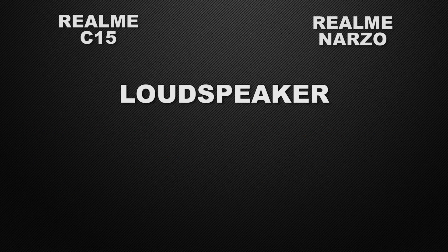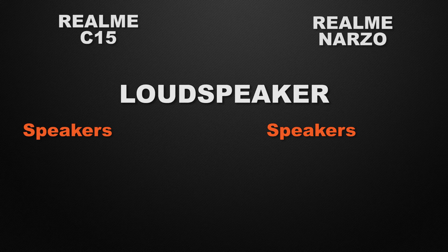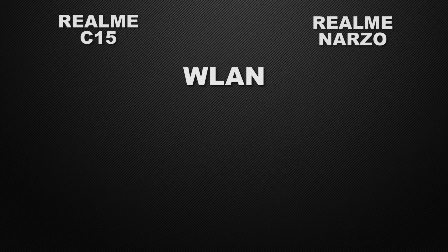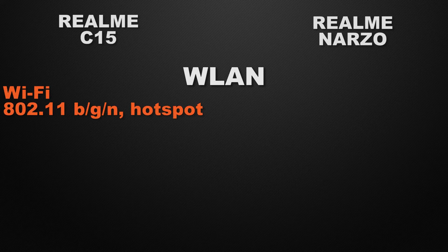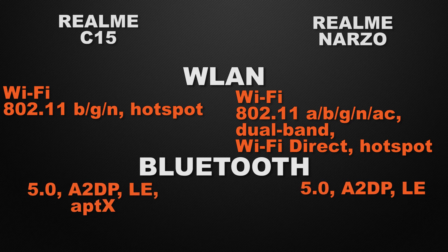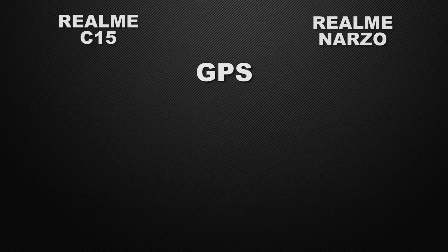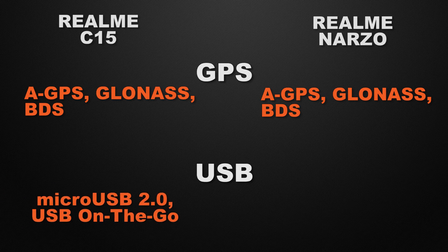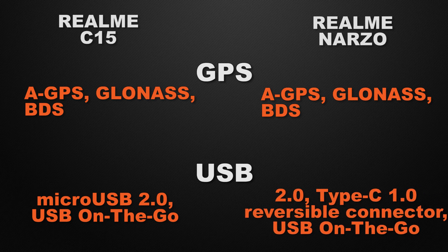Both devices have normal speakers and a 3.5mm headphone jack — ties on audio. For wireless LAN, the C15 has N-generation Wi-Fi and hotspot, while the Narzo has Wi-Fi a/b/g/n/ac dual-band, Wi-Fi Direct, and hotspot — Narzo wins with a newer Wi-Fi standard. Both have Bluetooth 5.0 and the same GPS support (AGPS, GLONASS, BDS) — ties. For USB, the C15 has Micro USB 2.0 with OTG and the Narzo has USB Type-C 2.0 with OTG — Narzo wins with Type-C.